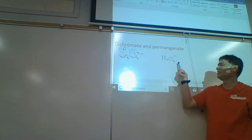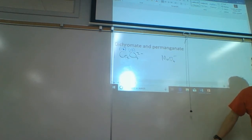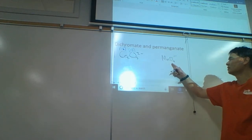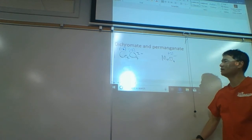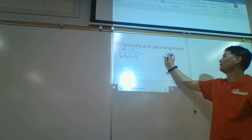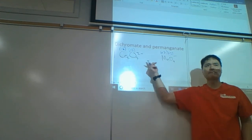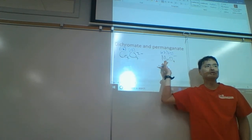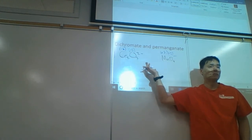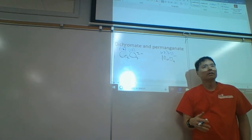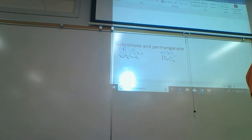The same goes for permanganate. Oxygen gets assigned minus 2 first, which makes manganese plus 7. You look at that and it's very high — that's a very high positive charge. This is what makes these two very powerful oxidizers and very dangerous chemicals. They're very reactive toward things that have electrons to give up.